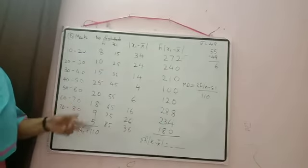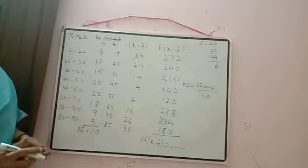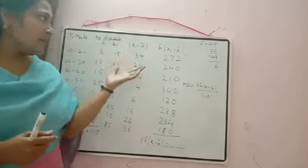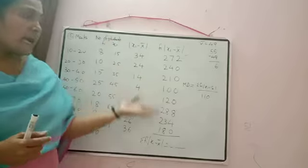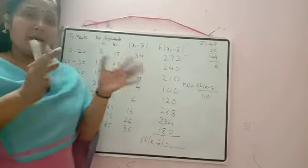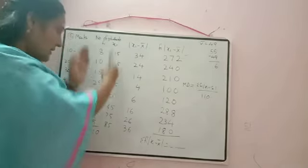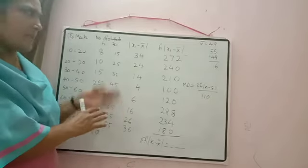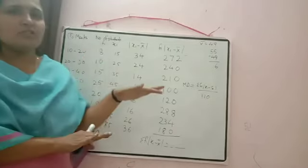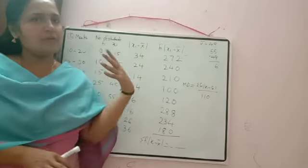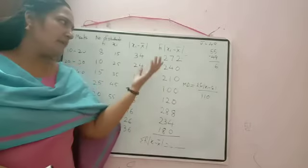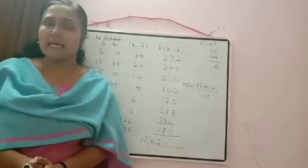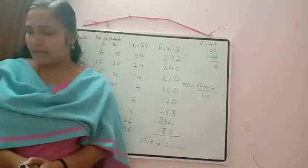I hope this method is clear. It is lengthy because we used the step deviation method, but that makes our calculation easier — otherwise big numbers make multiplication difficult. If you are comfortable with the direct method, you can use that also. One question I explained so you know how to do it using the step deviation method.